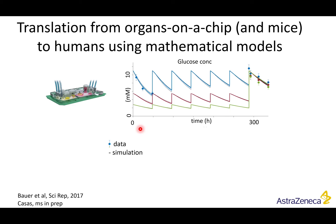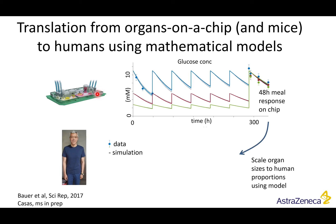With AstraZeneca, we use not only computer models but also physical models — organ-on-a-chip, or organs-on-a-chip. Here we have a little liver and a little pancreas made of human cells, which in principle can be taken from a specific person. Our model lines can describe the data from this little mini human.